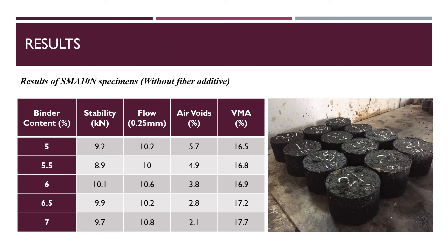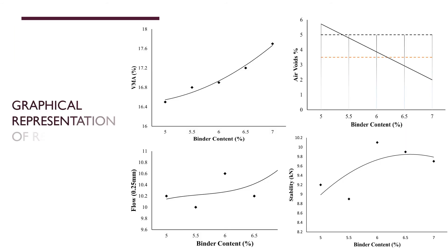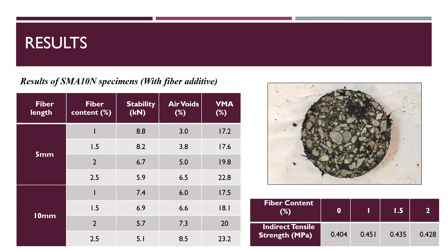These are the results of the laboratory testing. This shows SMA 10N specimens without fiber addition, along with the graphical representation of those results. Considering these results and graphs, I selected 6.5% bitumen content as the optimum binder content for casting specimens with fiber additive. These are the results obtained for testing SMA 10N specimens with fiber additive, with separate specimens tested for different fiber lengths and different fiber contents. The indirect tensile strength of the specimens was also tested against fiber content. This picture shows the SMA mix with fiber additive, where the stone-on-stone contact is clearly visible.